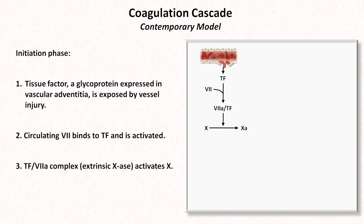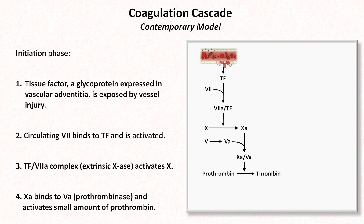The extrinsic tenase activates factor 10, which then binds to activated factor 5 to form the prothrombinase complex, which in turn converts a small amount of prothrombin into thrombin. Although there is a small magnification effect, as each extrinsic tenase can activate many copies of factor 10 and each activated factor 10 can activate many copies of thrombin, the amount of thrombin produced from the initiation phase is still insufficient to lead to significant generation of fibrin threads and thus a blood clot.